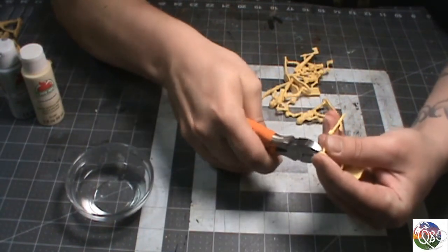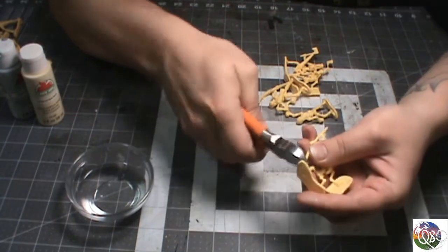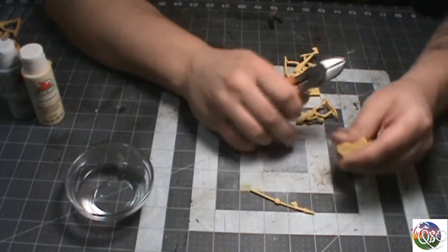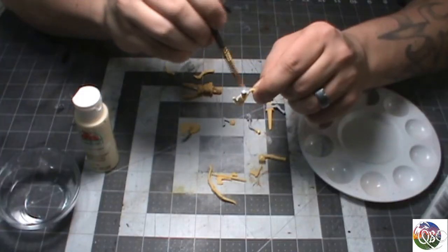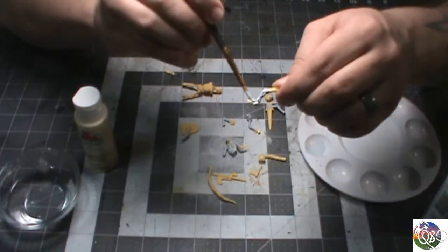Now you really should wash these things off with some hot soapy water before you try to paint them because they still have mold release on them. And then just go ahead and start with some light grey. Pretty much cover everything, at least all the bone pieces.